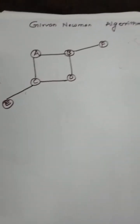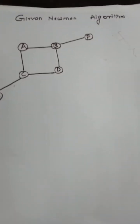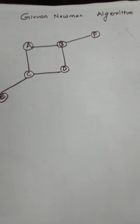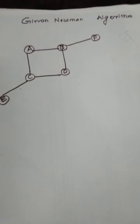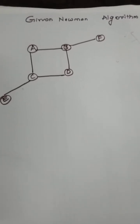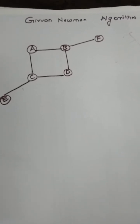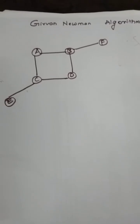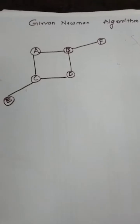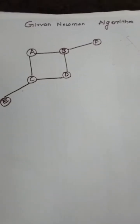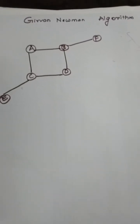Today I am going to explain the Girvan-Newman algorithm. The Girvan-Newman algorithm is used to find communities in a network. Regarding communities, I have explained that in another video, so have a look at it. Now let us directly go to the new algorithm.